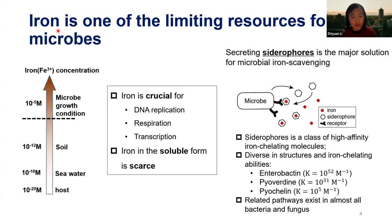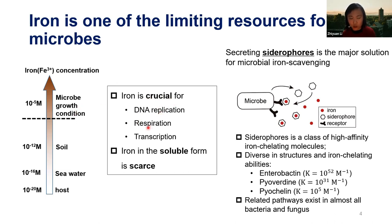Ever since the Great Oxygen Event about 2.5 billion years ago, the concentration of bioavailable iron has been extremely low — orders of magnitude lower than what is required for microbial growth. Iron is crucial for microbes for replication and respiration; they need it, but the bioavailable iron is at such low concentration that they need to find a solution.